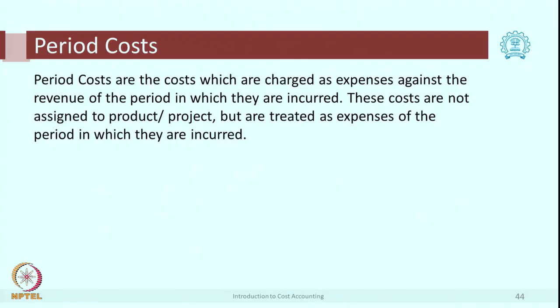The last classification is product cost versus period cost. If you calculate the total cost for manufacturing or purchase of a product, it becomes a product cost — it is inventoriable because you can add it to the inventory. As against this, there are period costs, which are more related to time — for example, rent or salary. They are incurred for a certain time, not much in relation to the number of units produced, so they are considered period costs.